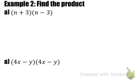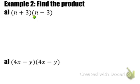In example 2, we're still going to find the product. Luckily for us, the binomials are n plus 3 and n minus 3 — the same binomial except with opposite second terms. This is actually called the difference of two squares. I'll show you why we call this the difference of two squares when we multiply it out. Just like before, we're going to use the box method.